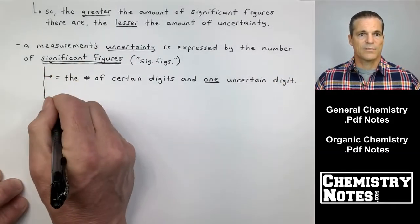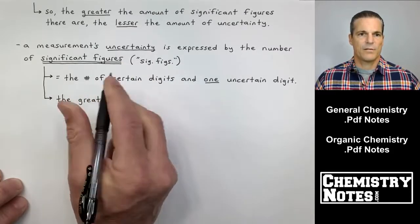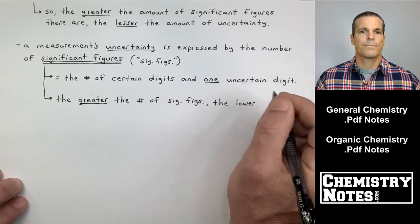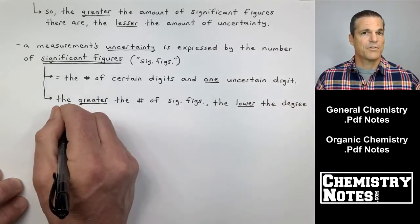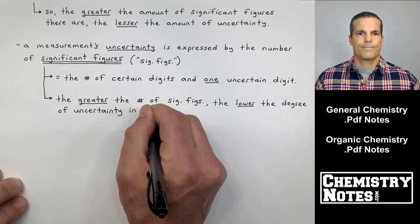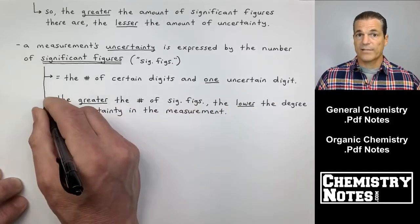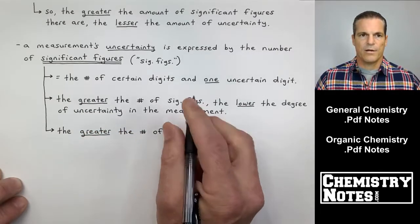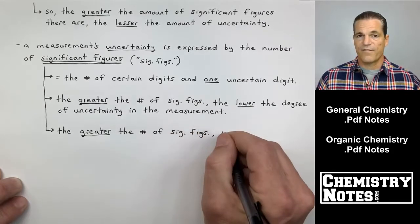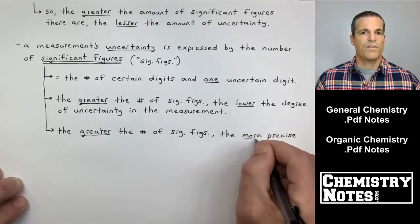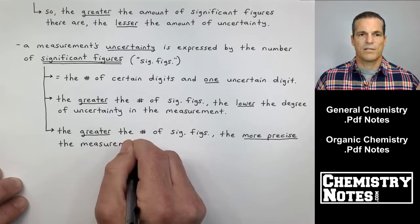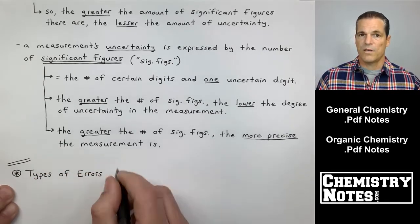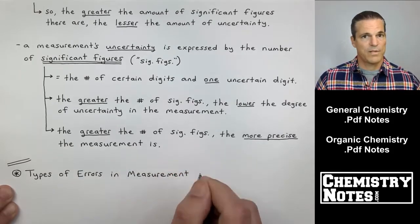So, significant figures. It's the number of certain digits and one uncertain digit. That one uncertain digit is your best guess. So, I know I'm beating this over the head here. I'm beating a dead horse here. But the second bullet point says the same thing we've seen. The greater the number of sig figs, the lower the degree of uncertainty involved in that measurement. So, as you might expect, we are going to want to practice this, right? We're going to do so in just a second. But I've got a third bullet point I want to write out here about significant figures. And then we'll do practice problems on sig figs in the next video. So, it says the greater the number of significant figures, the more precise the measurement is. So, these two bullet points at the end here are kind of saying the same thing. The greater the number of significant figures, the lower the degree of uncertainty in the measurement. The greater the number of significant figures, the more precise the measurement is.